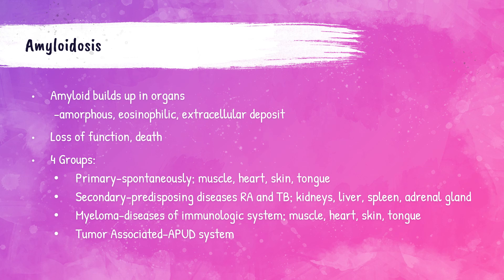In secondary amyloidosis, amyloid is most often deposited within the kidneys, spleen, adrenal glands, and liver tissue. Amyloid associated with myeloma is another type of amyloidosis, and the deposits are frequently found in the same tissues as primary — muscle, skin, heart, and tongue.